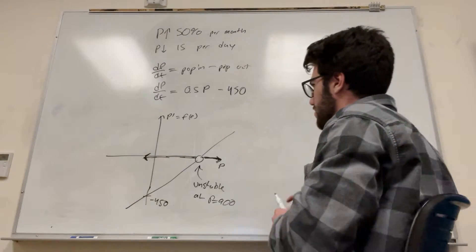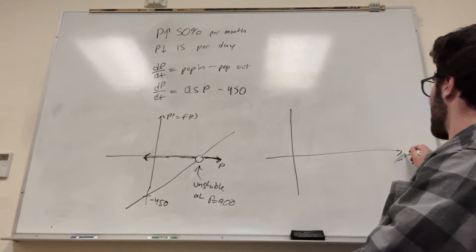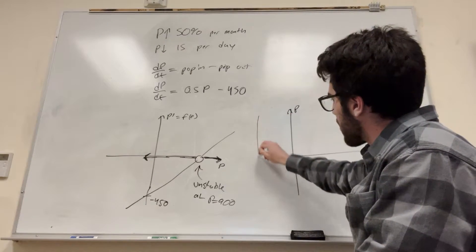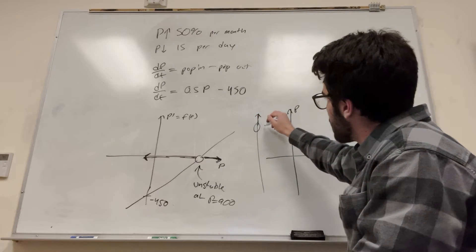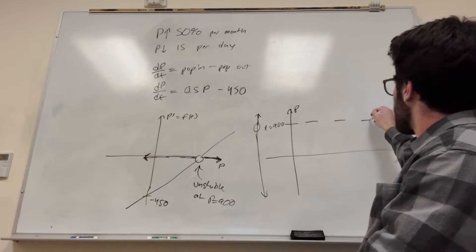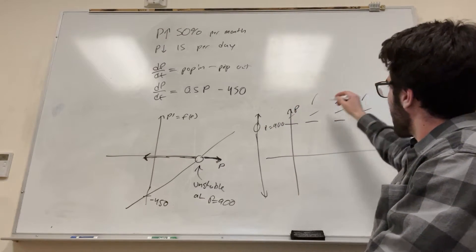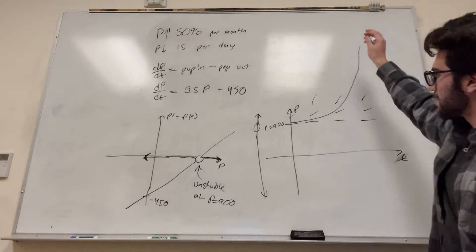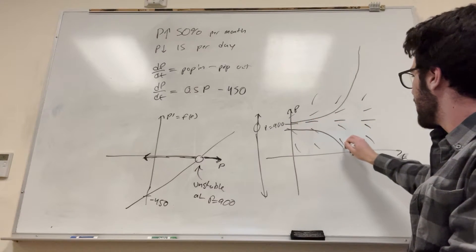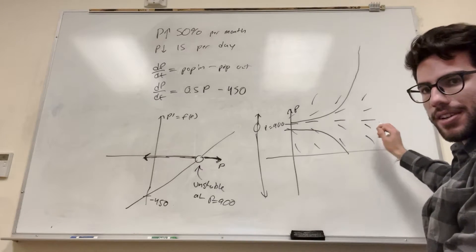Now let's draw the population versus time graph. Our equilibrium is at P = 900. If the population starts above 900, it exponentially grows upward. If it starts below 900, it exponentially decreases toward extinction — population reaches zero. If it starts exactly at 900, it stays at 900 forever according to this equation.